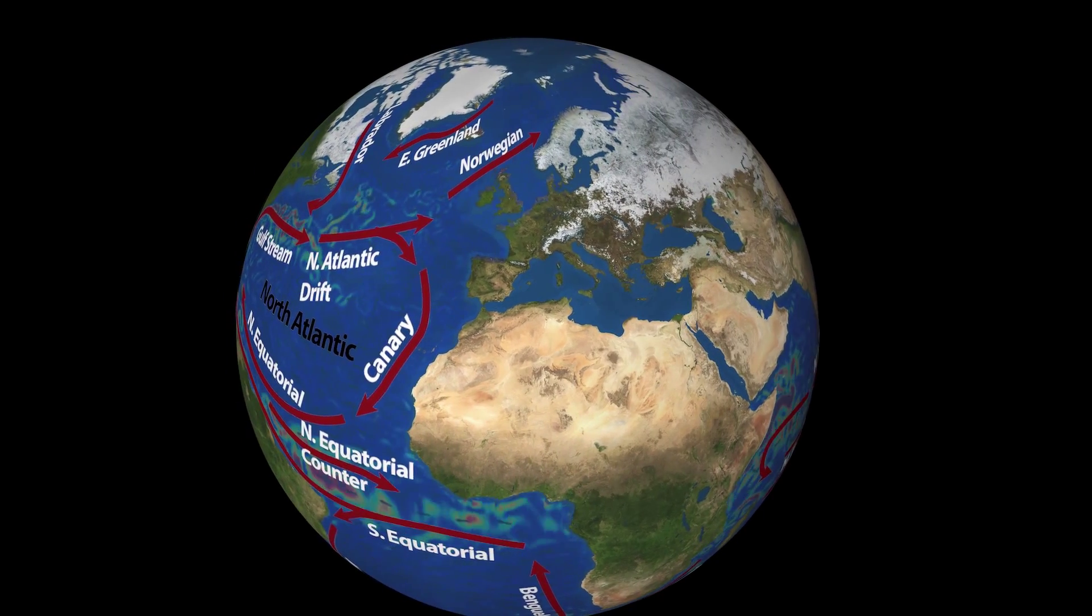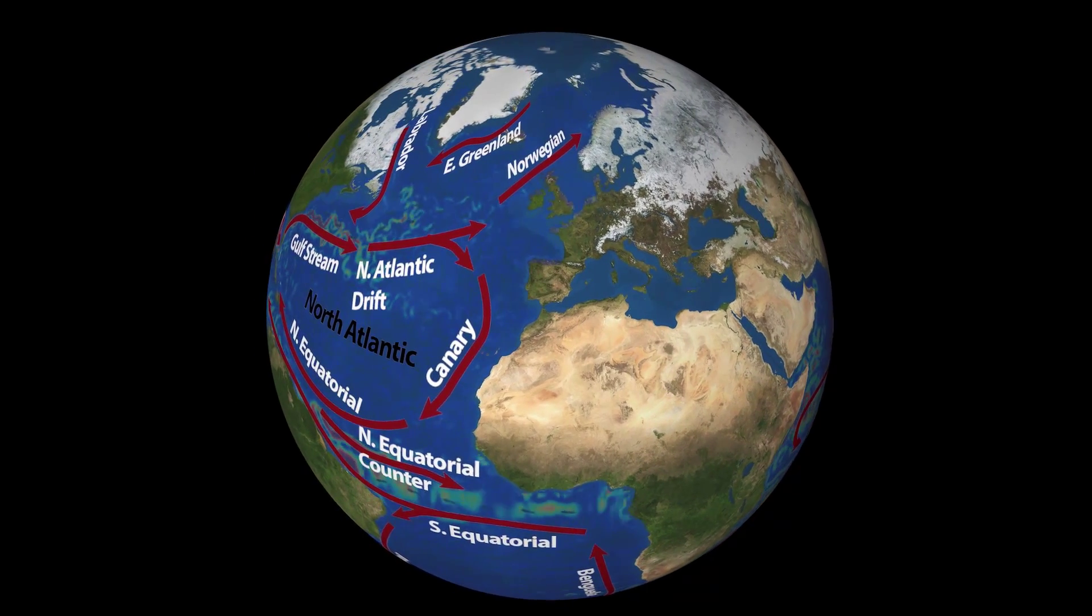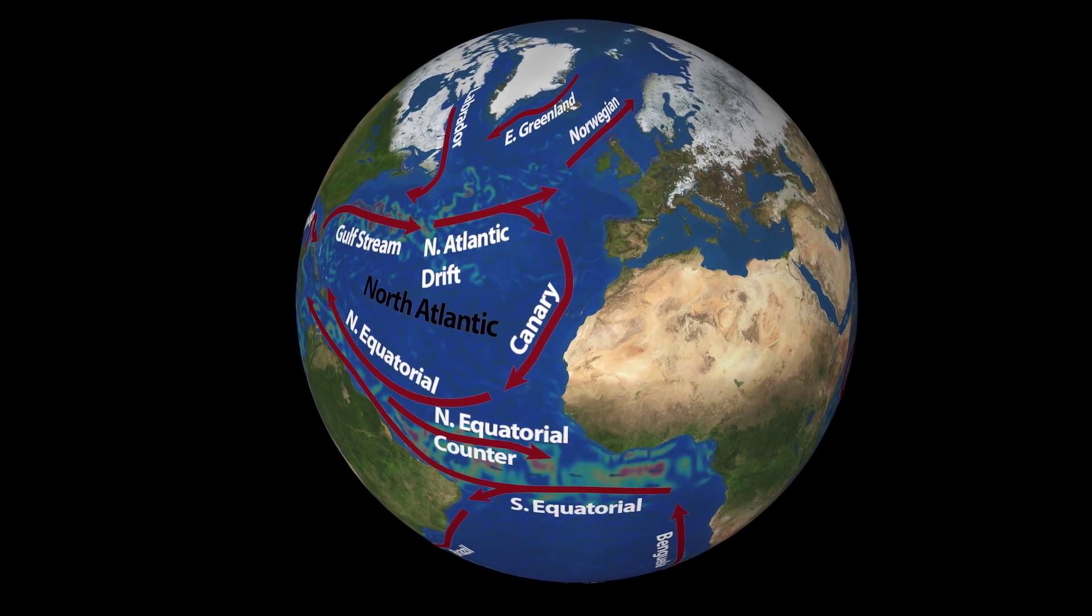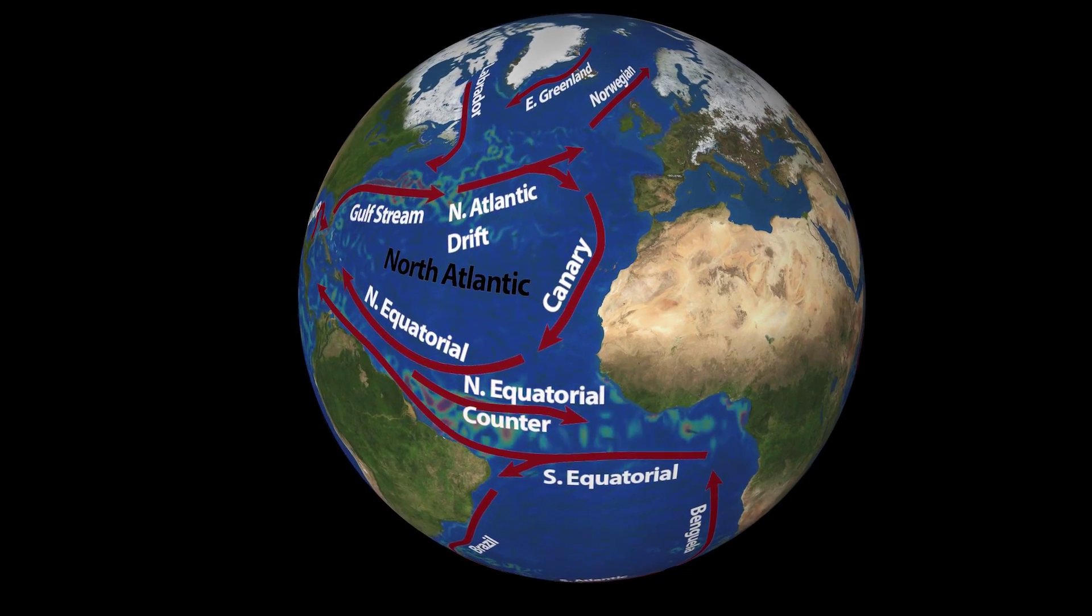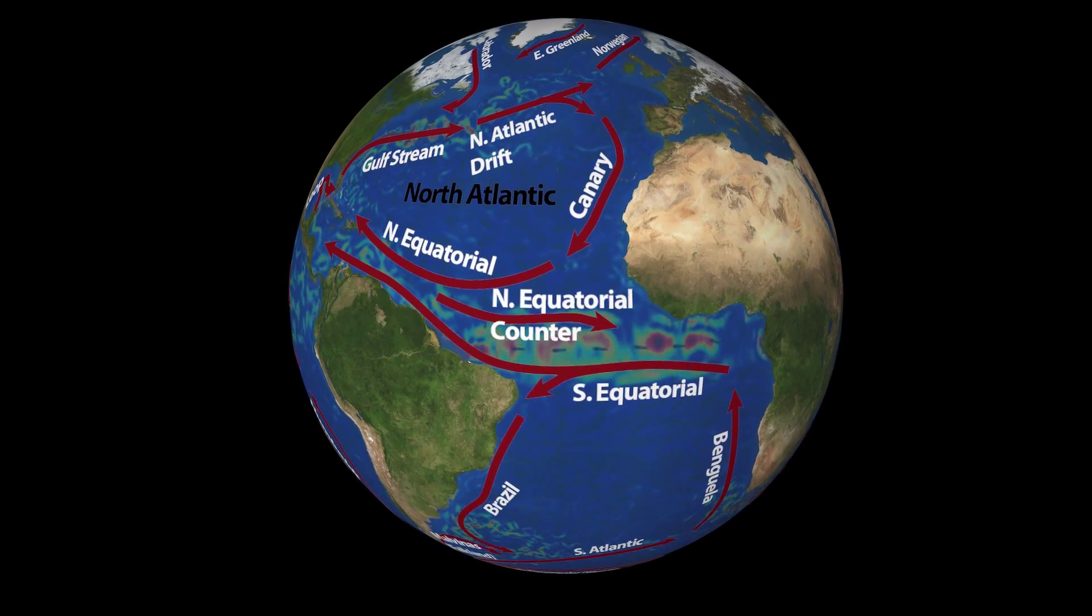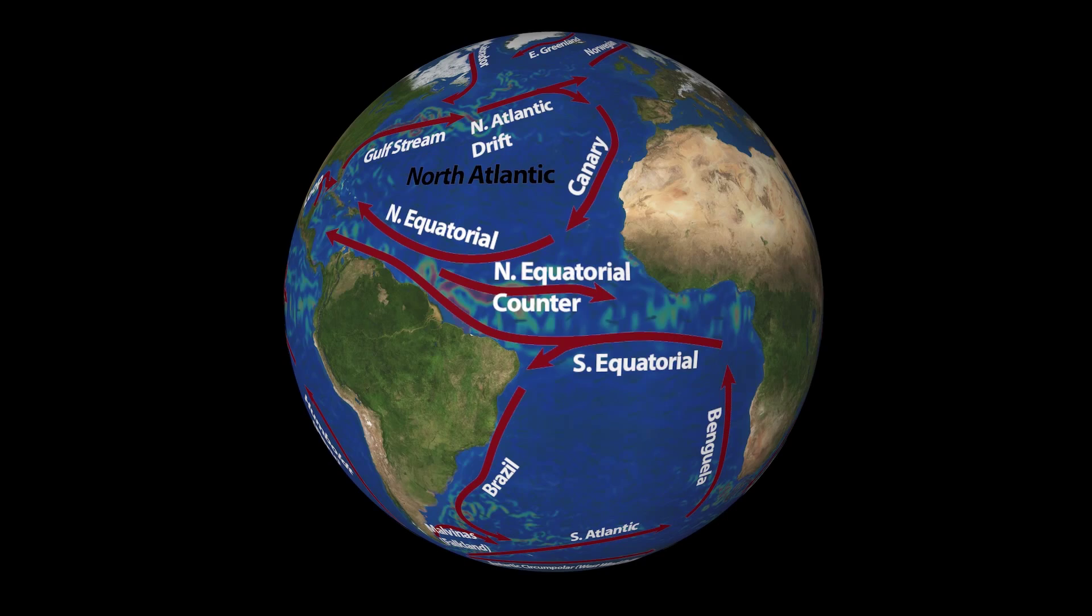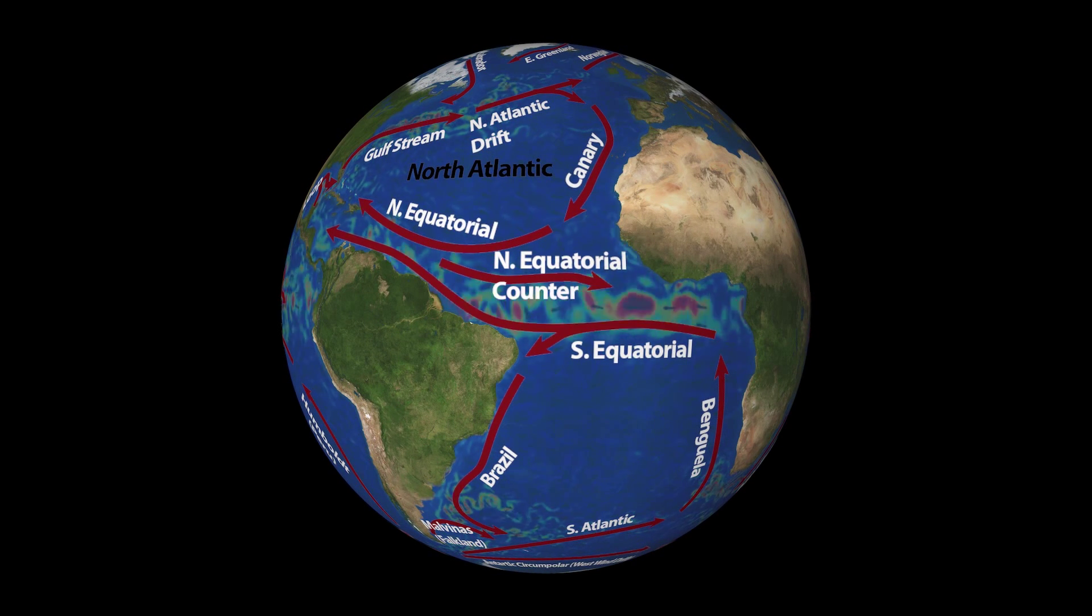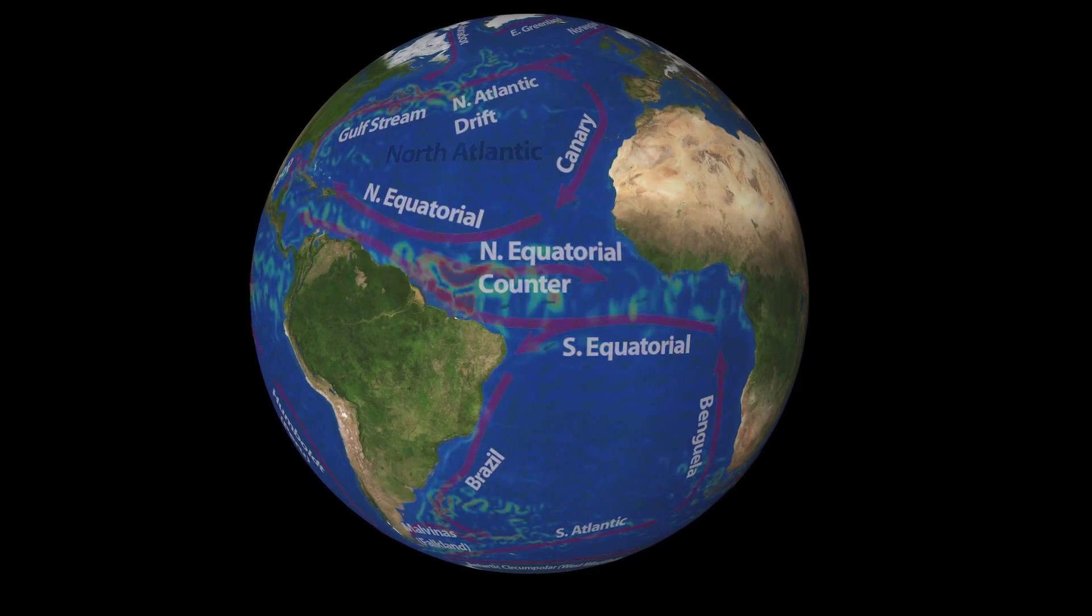The question arises as to how the gyres form. Here, a process known as Ekman transport helps us to understand why the surface ocean circulation is dominated by gyres. As we have discussed, Coriolis deflects the current to the right in the Northern Hemisphere and to the left in the Southern Hemisphere. For the moment we consider the Northern Hemisphere.